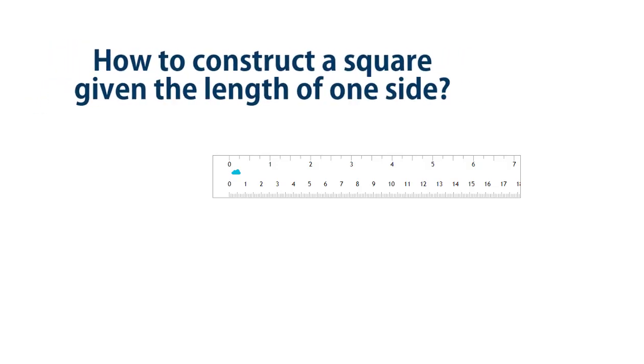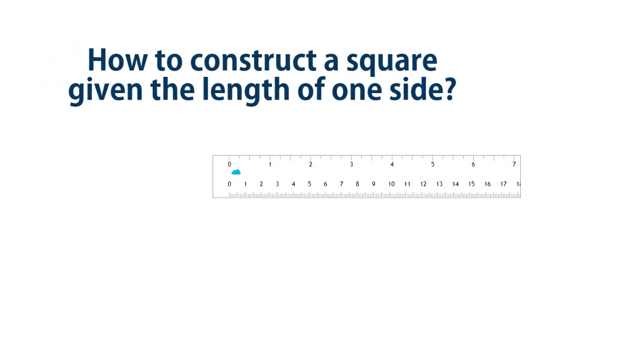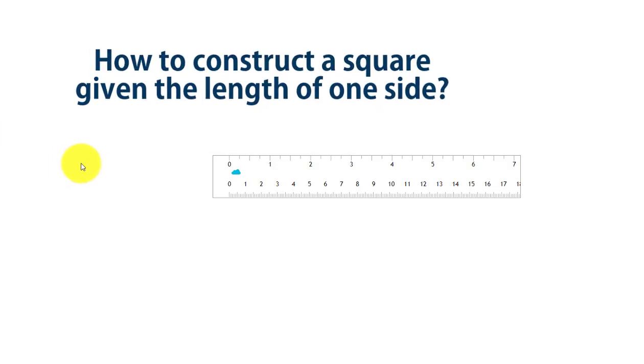Hello students, in this lecture we will learn how to construct a square given its side. Suppose one of its side lengths is equal to 4 centimeters. Just construct 4 centimeters, but you have to extend this line beyond 4 centimeters.